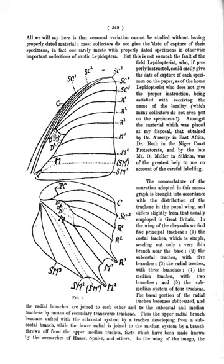Helminthophagy: feeding on worms classified with helminths, including parasitoids of helminths. Hemocoel: interior of the insect's anatomy, including all organs and hemocytes. Hemocyte or hemolymph: a fluid in the circulatory system of insects containing nutrients, fat, water, etc. Hemophagy: feeding on blood.